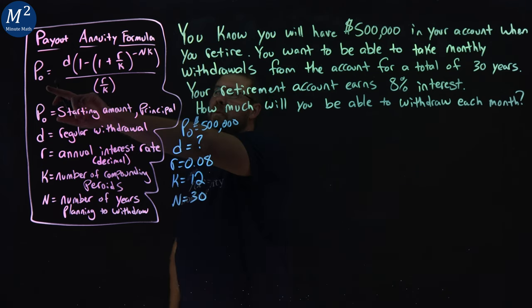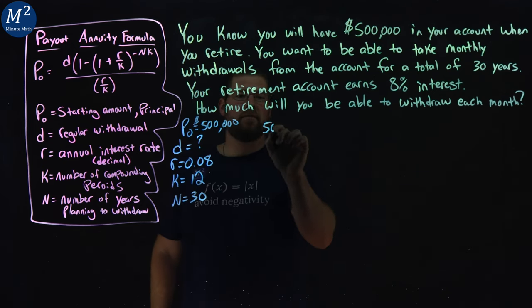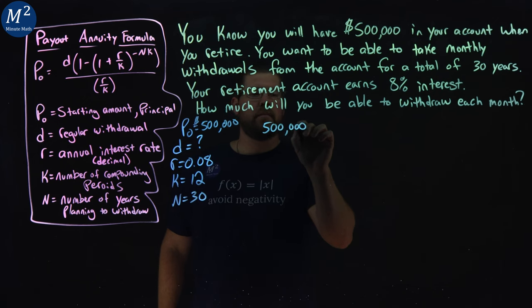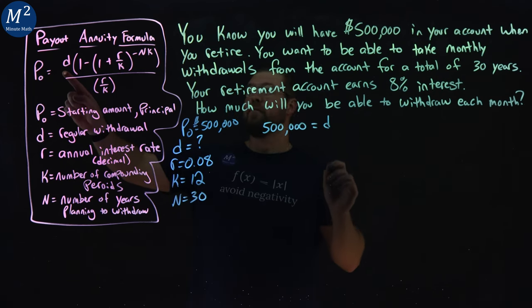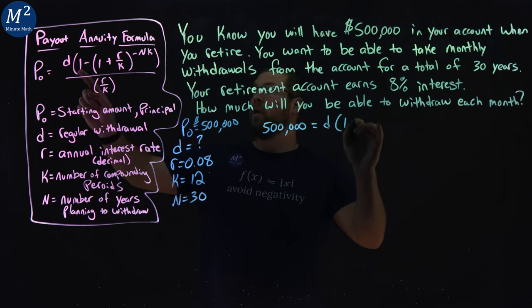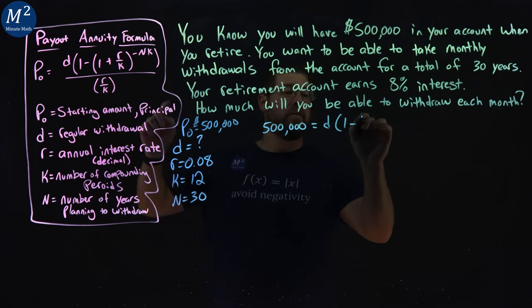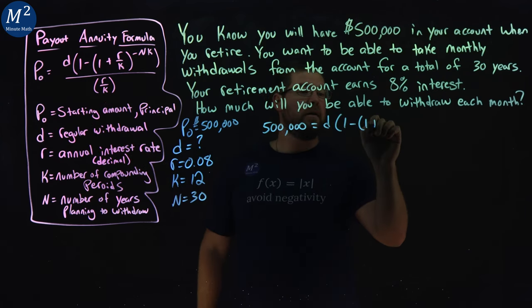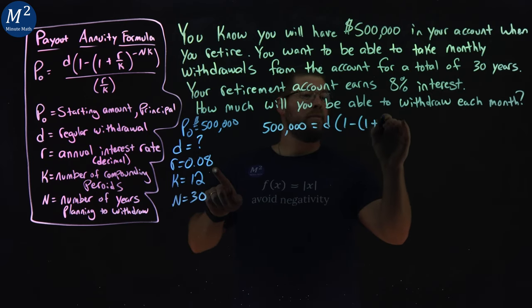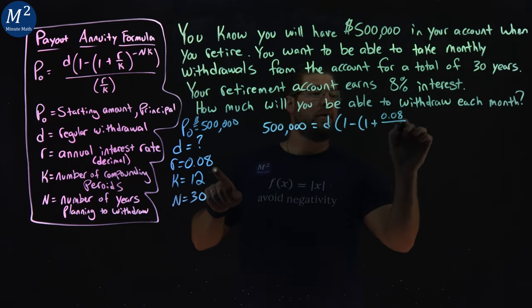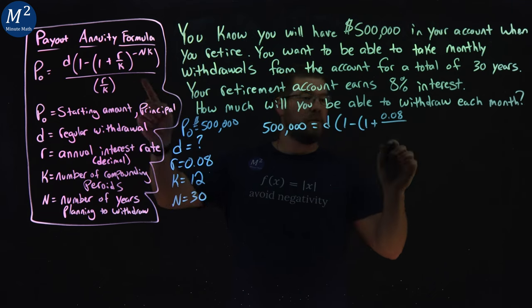P₀, first part, we know is $500,000. That is equal to the D value that we're supposed to find times 1 minus parentheses, 1 again, plus our R value as a decimal, 0.08, over our K value, which is 12.